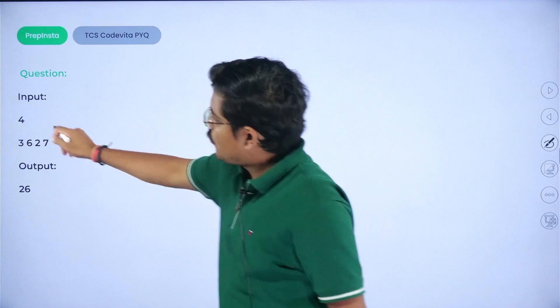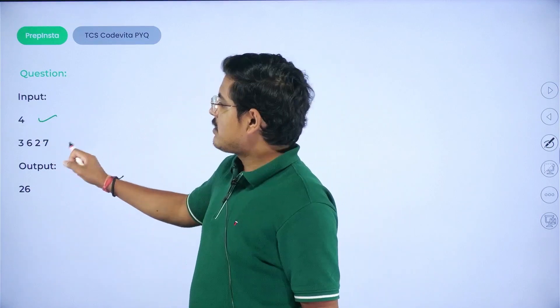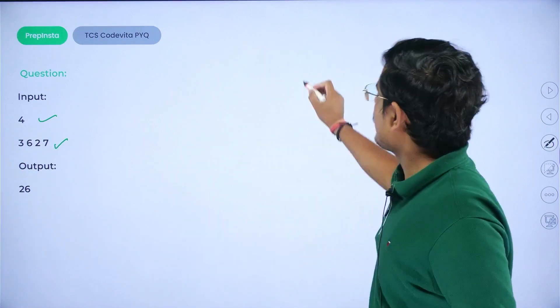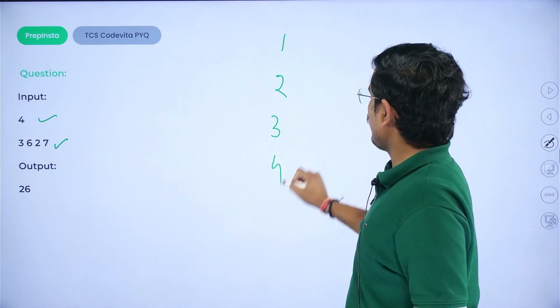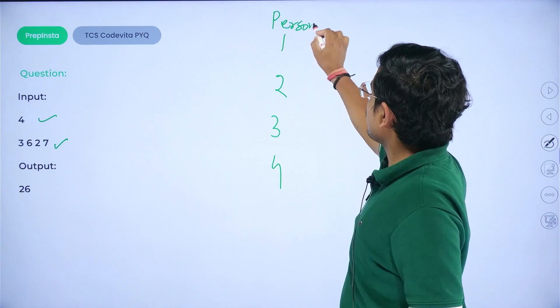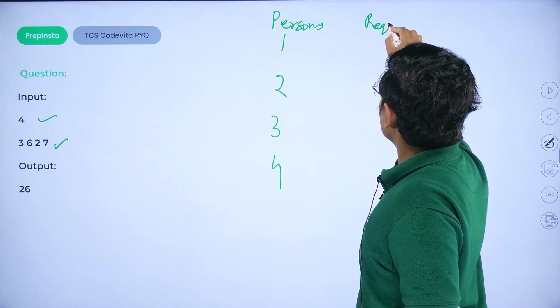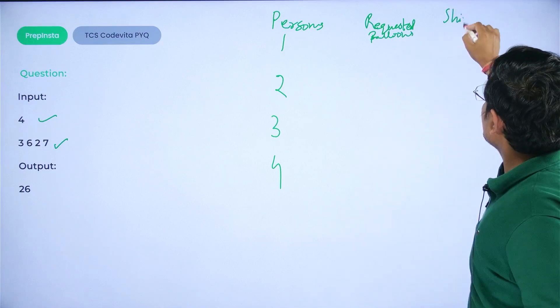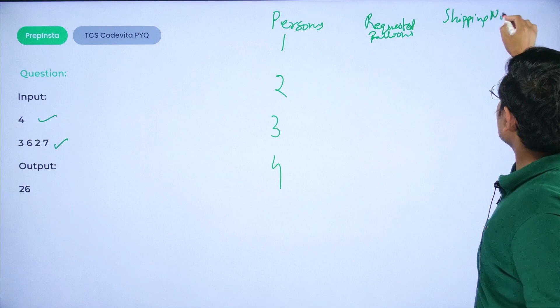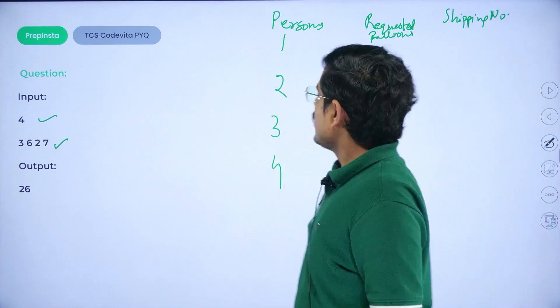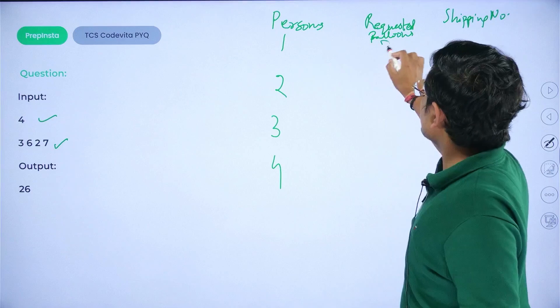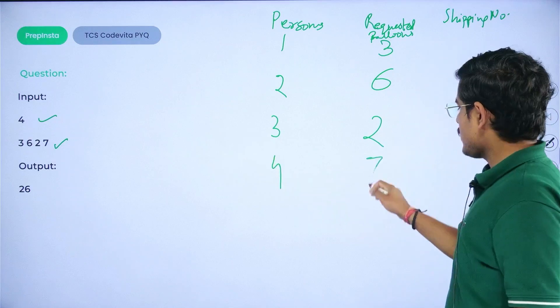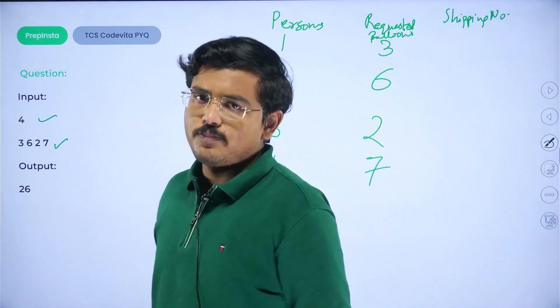This is the input. Four people have requested balloons, and if you correctly see, that's the way in which they have actually asked. So if I tell you that one, two, three, and four, these are the number of persons, requested balloons, and shipping number. Shipping number is basically how many balloons you would ship. So the first person has asked for three balloons, second one has asked for six balloons, the third one has asked for two balloons, the fourth one has asked for seven balloons.